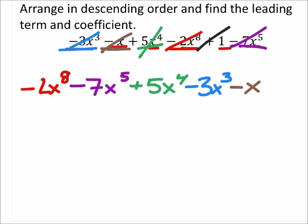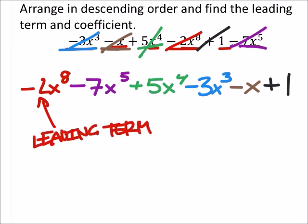And finally, I got this plus 1. So the leading term in this one is this negative 2x to the power of 8, and the leading coefficient would be the coefficient of x to the power of 8, which is negative 2.